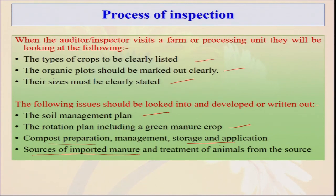Sometimes you cannot produce your own manure due to insufficient livestock, so you must import manure from other farms or organizations. But the source matters — whether they are following correct procedures. If there is too much pesticide residue or non-organic feed, the manure you are purchasing may not be allowed. Treatments and animal management — including what type of vaccination is allowed — must be considered. Certain vaccinations are allowed for animals, but too much antibiotic use is not permitted in organic farming.